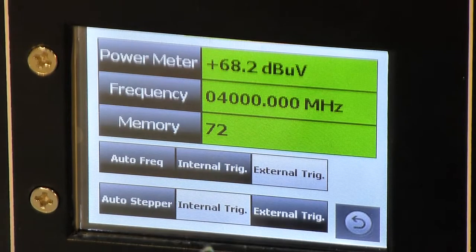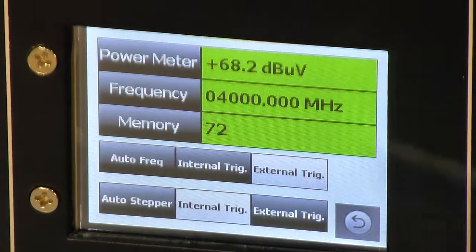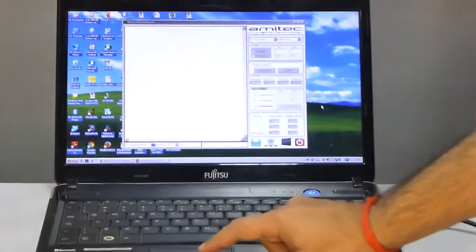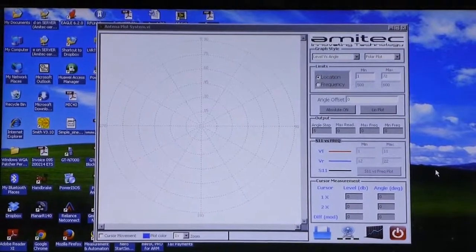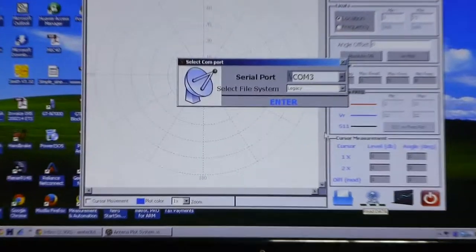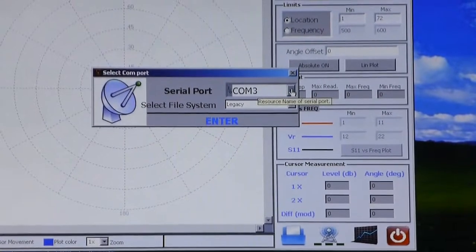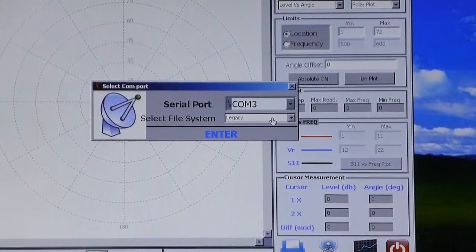To dump the memory data, to take a plot, you need to dump the memory data on a PC while connecting a USB cable. We have connected a USB cable on this instrument to a laptop. Now open the Amitek Polar Plot system on the laptop. Click on this button. A new window will appear. It says the serial port. Select the appropriate port. In our case, COM3 is the port. Select the file system type.